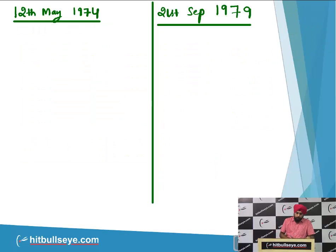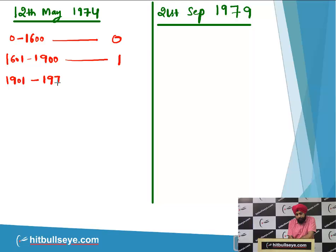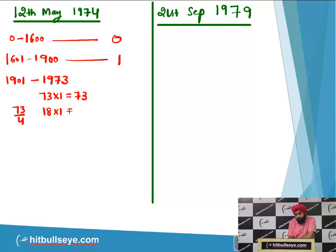Following the traditional approach: from 0 to 1600 there will be 0 odd days; 1601 to 1900, every 300 years gives us 1 odd day. From 1901 to 1973 there are 73 years, giving 1 odd day each, and 73 divided by 4 gives 18 leap years contributing 1 extra odd day each. Adding these gives 91, which is 13 complete weeks, so it gives 0 odd days.